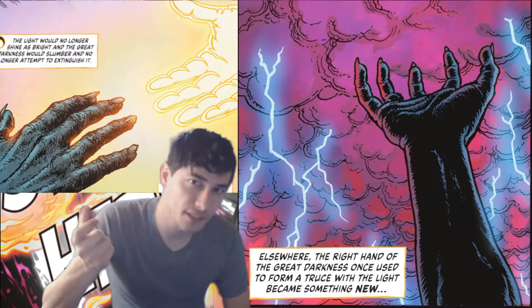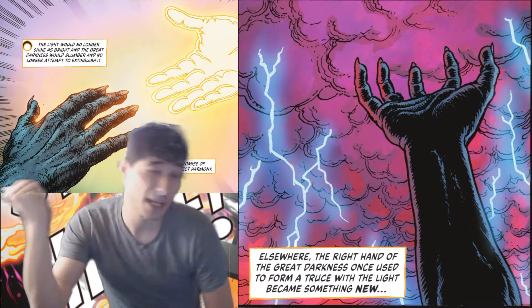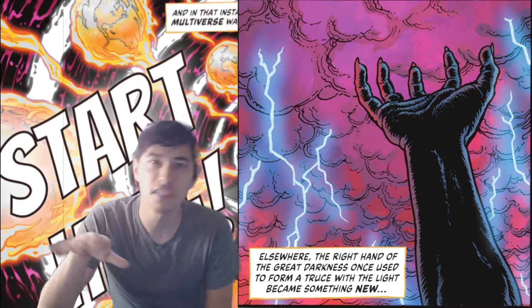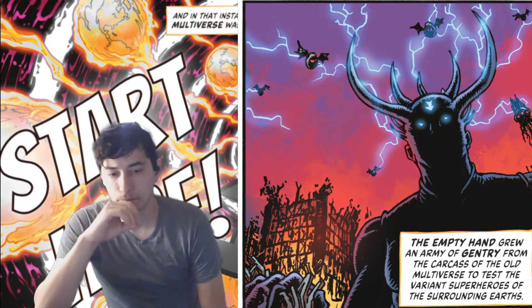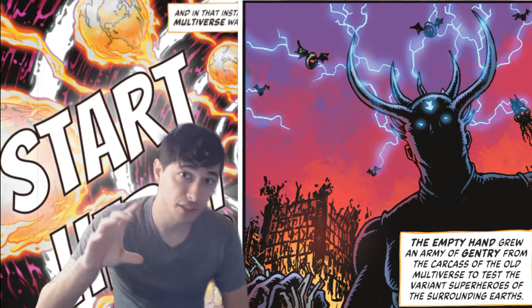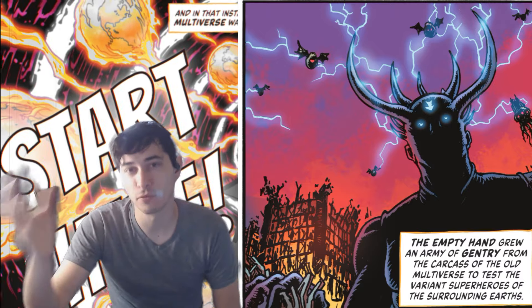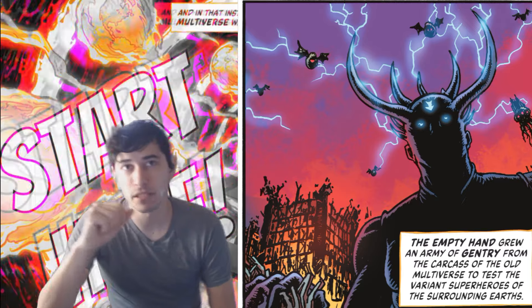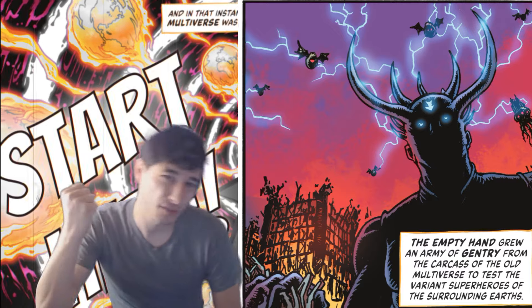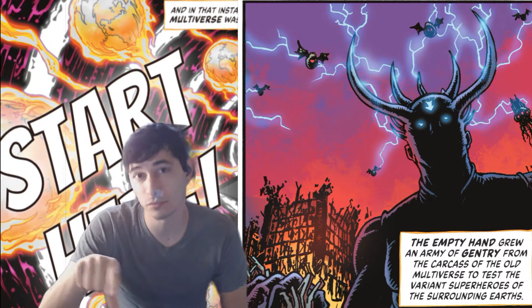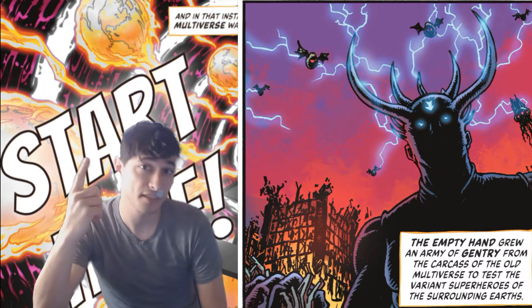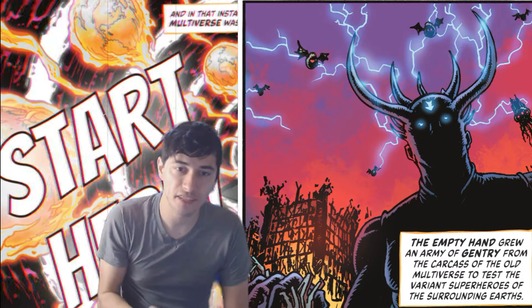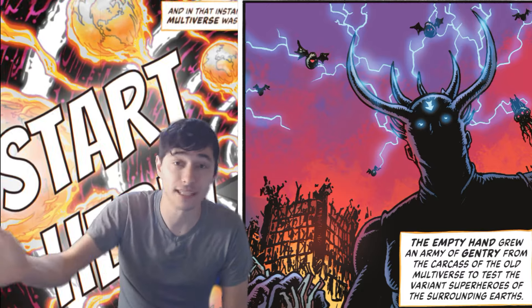But as all that was going on, the right hand of the Great Darkness — the one that shook that hand of light way back — actually falls off and becomes something new entirely: something known as the Empty Hand. The Empty Hand is a wildly dangerous figure, basically the metaphorical right hand of the Great Darkness. It starts to grow a powerful army of things called the Gentry from the carcass of the old multiverse — the multiverse destroyed in Crisis on Infinite Earths — whose body basically fell into the Great Darkness and they made an army out of everything that was left there.